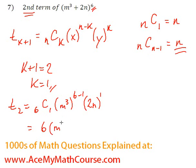Here we have m³ to the power of 5, because 6-1 is 5, and 2n to the power of 1 is just 2n.